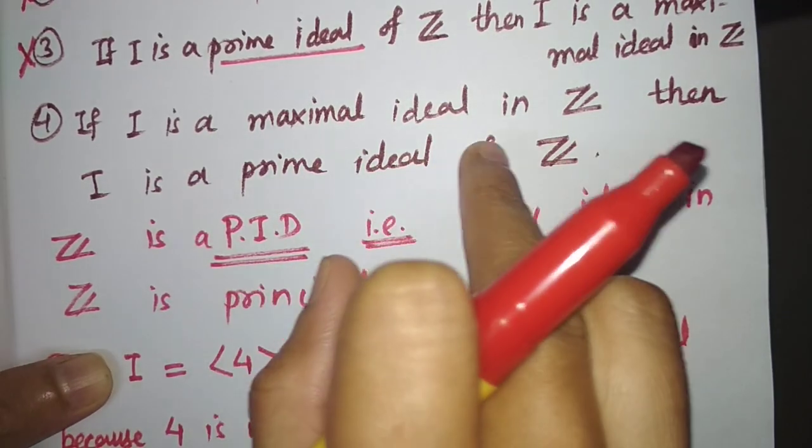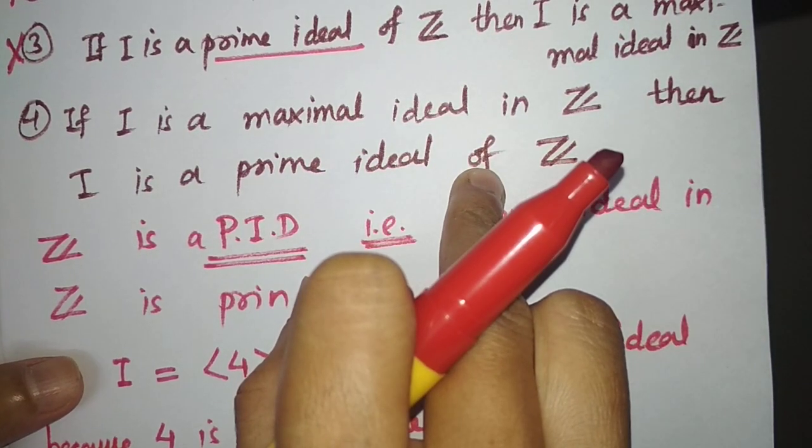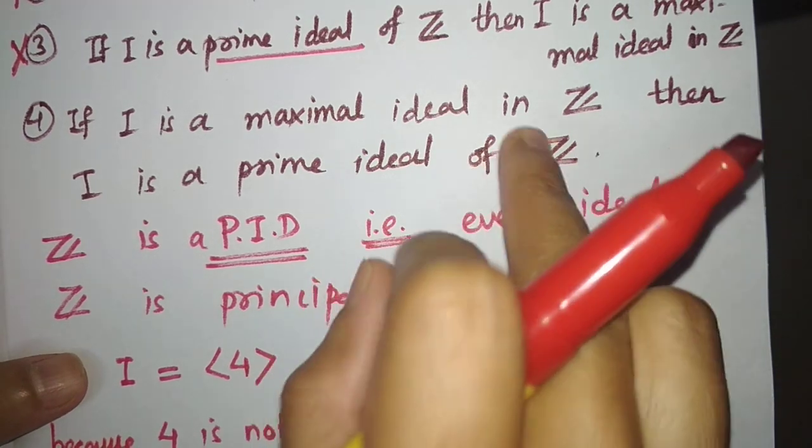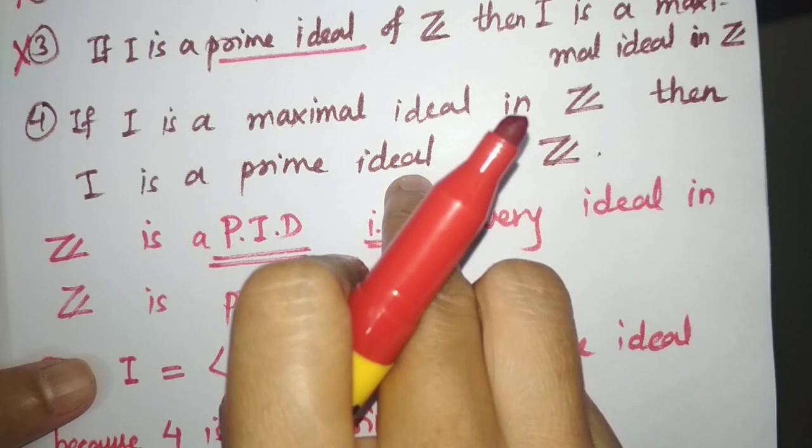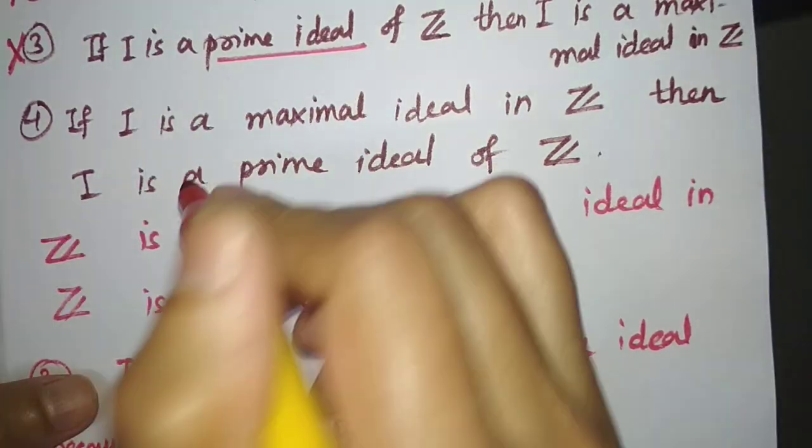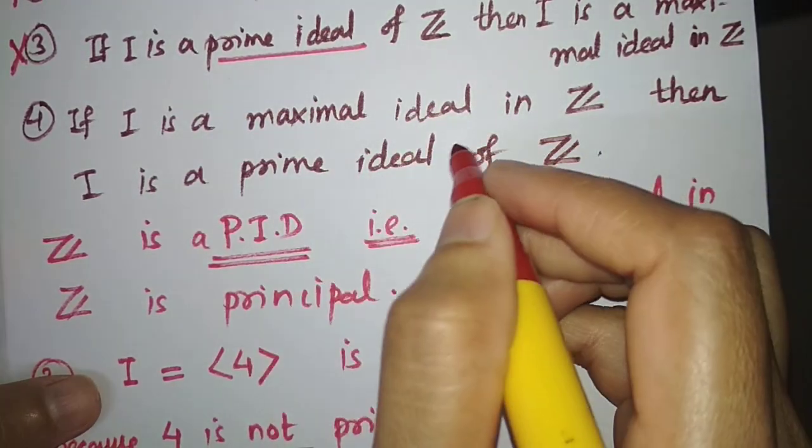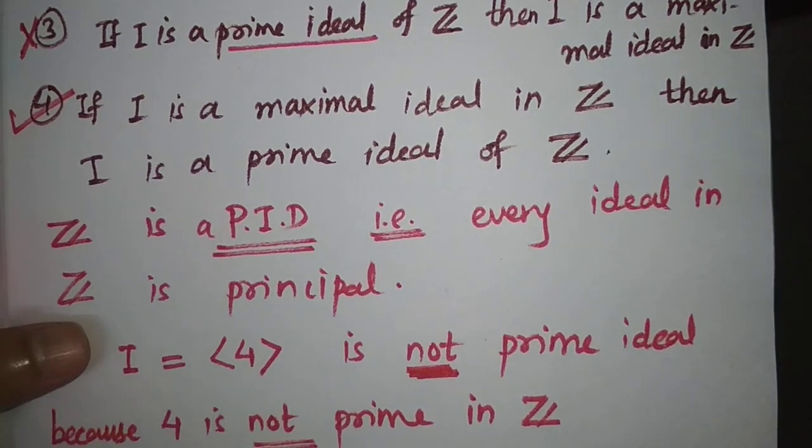So this is true. If we have an integral domain, then a maximal ideal gives a prime ideal. So a maximal ideal is a prime ideal. This is true. Thank you.